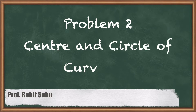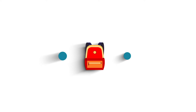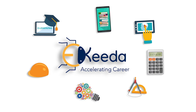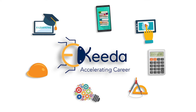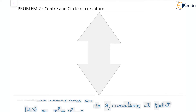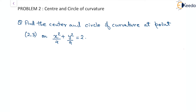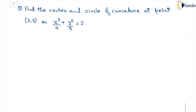In this session we are going to discuss another problem on center and circle of curvature. The question is: find the center and circle of curvature at point (2,3) on the curve given as an ellipse. From the formula for radius of curvature and the x and y coordinates for the center, we need to find the first derivative and the second derivative first.